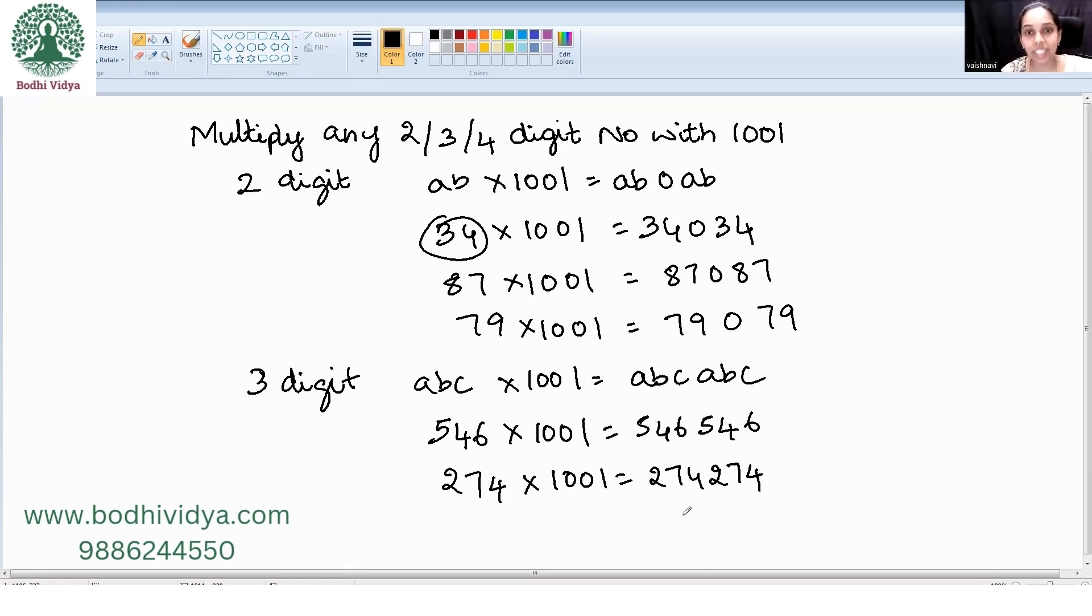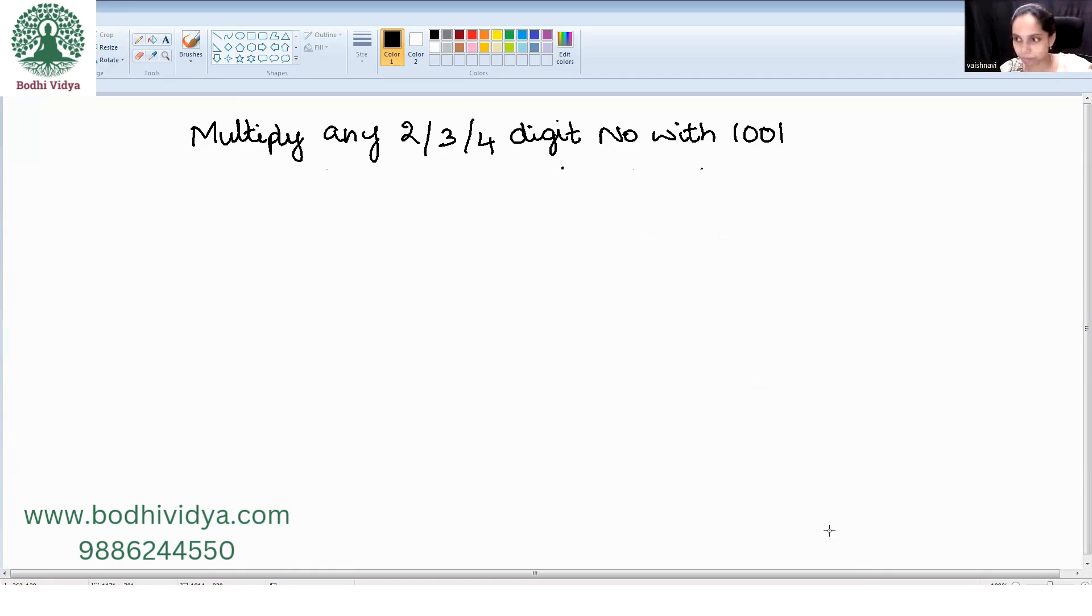Now we will take the case of four-digit. It is ABCD into 1001. The answer will be ABCD plus A, then append BCD. We just need to write the BCD terms.